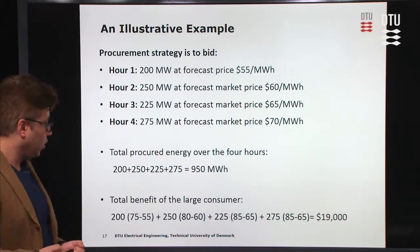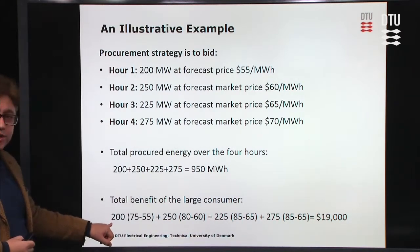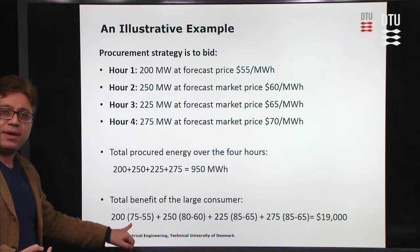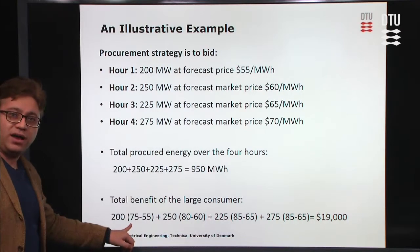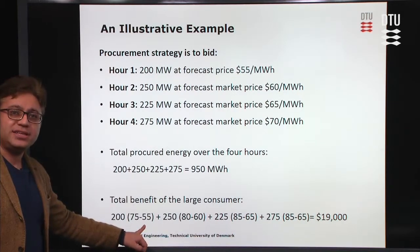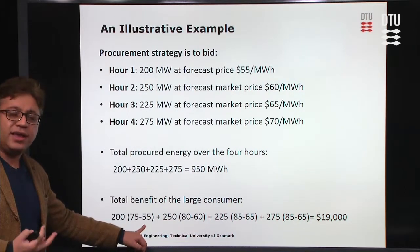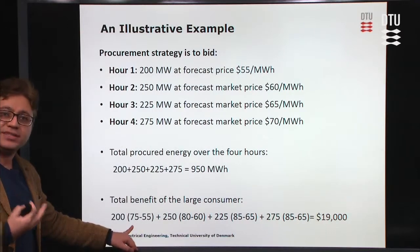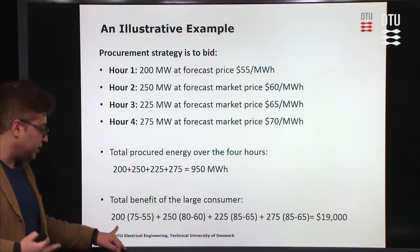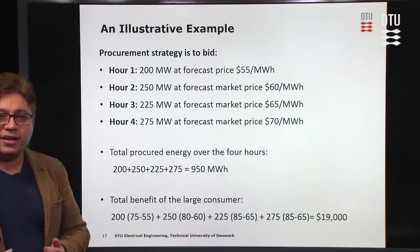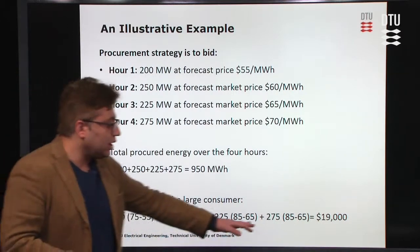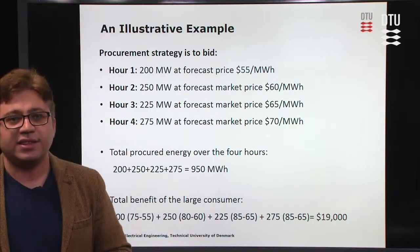Let's calculate the total procured energy of the large consumer over the four hours: 200 + 250 + 225 + 235 = 950 MWh. To calculate the total utility, for hour one the large consumer buys 200 MW at a utility price of $75 while the market price is $55, giving a benefit of $20/MW — so 200 × 20 = $4,000 for hour one. Summing across all hours, the total expected utility is $19,000.